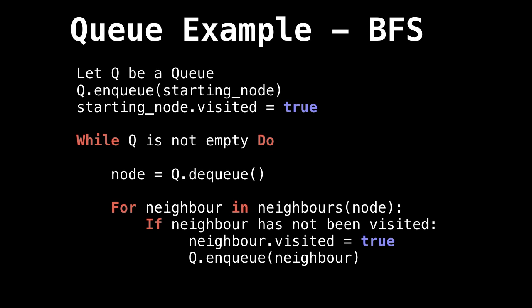And while our queue is not empty, we pull an element from our queue, or dequeuing. And then for every neighbor of this node we just dequeued, if the neighbor has not been visited yet, mark the neighbor as visited and add it to the queue.